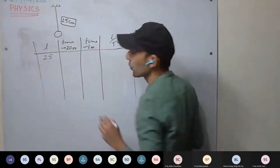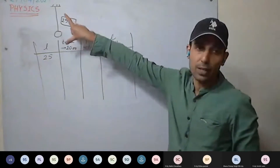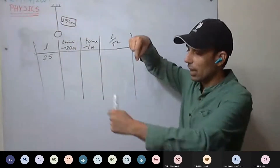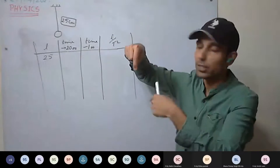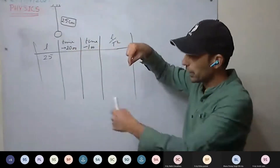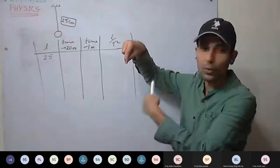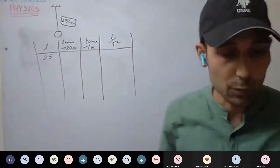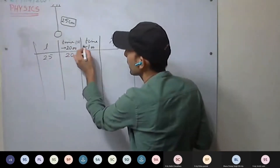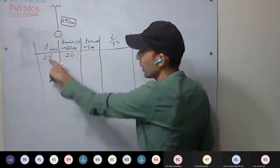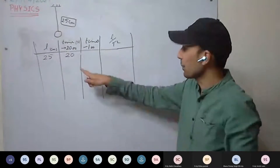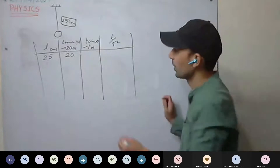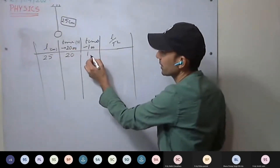When the length is 25 centimeters — the effective length is 25 cm — the pendulum completes 20 oscillations in 20 seconds. So the time to complete one oscillation is 20 divided by 20, which is 1 second. That is the time period.